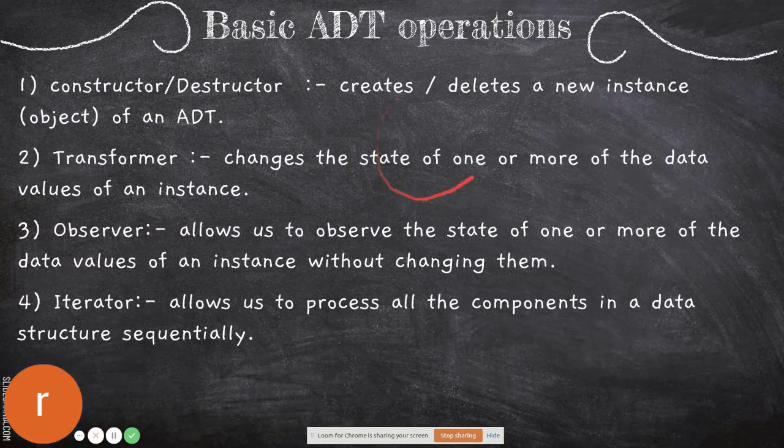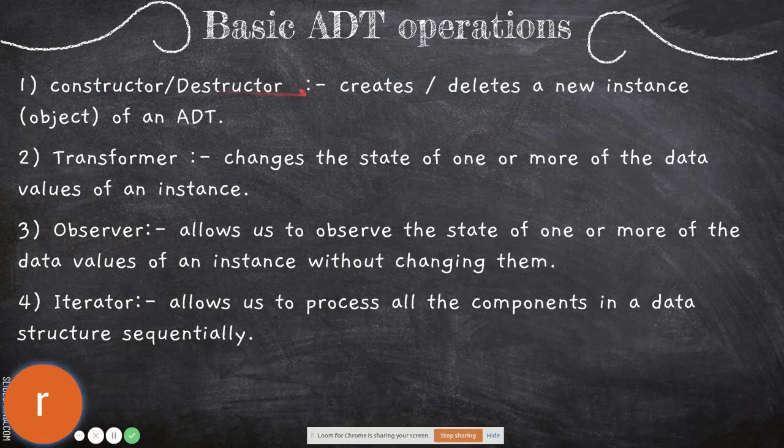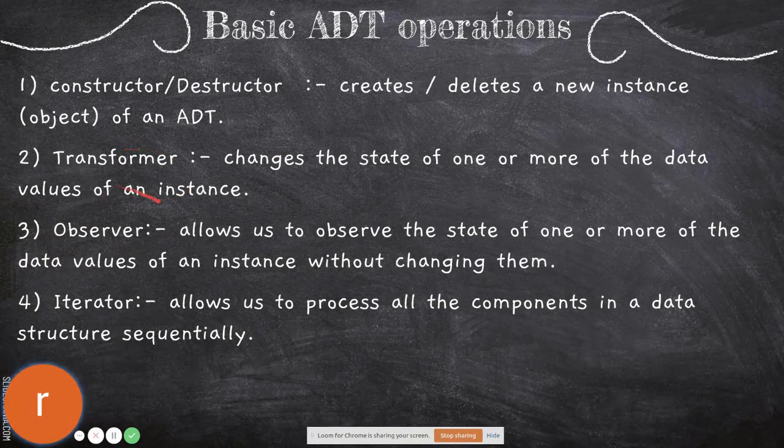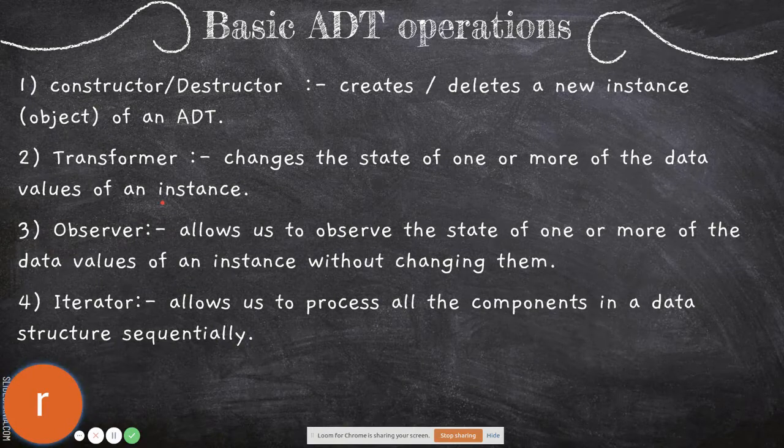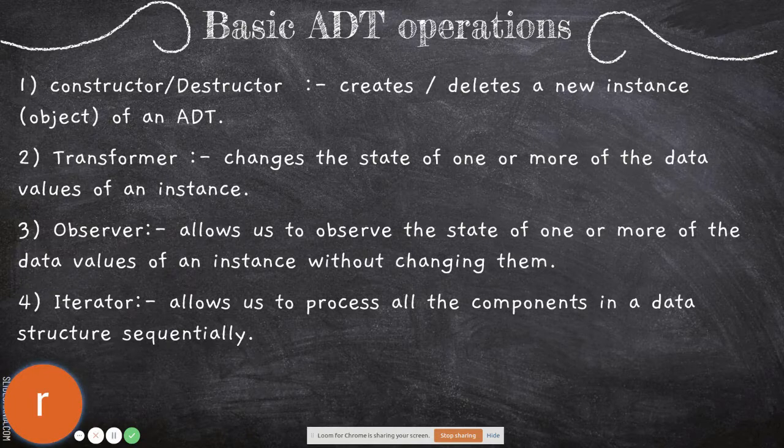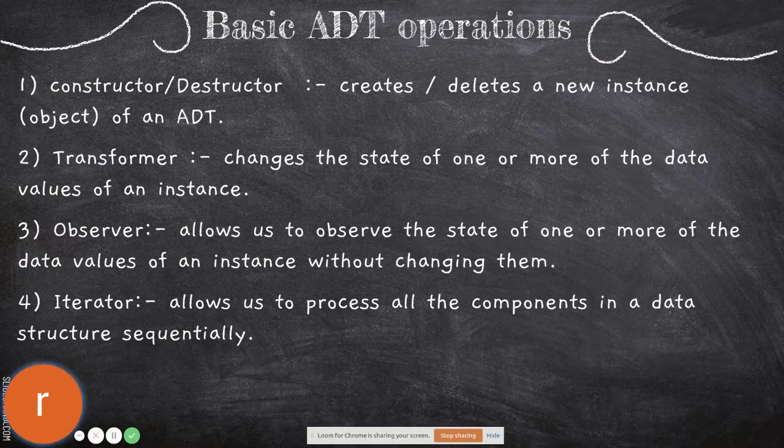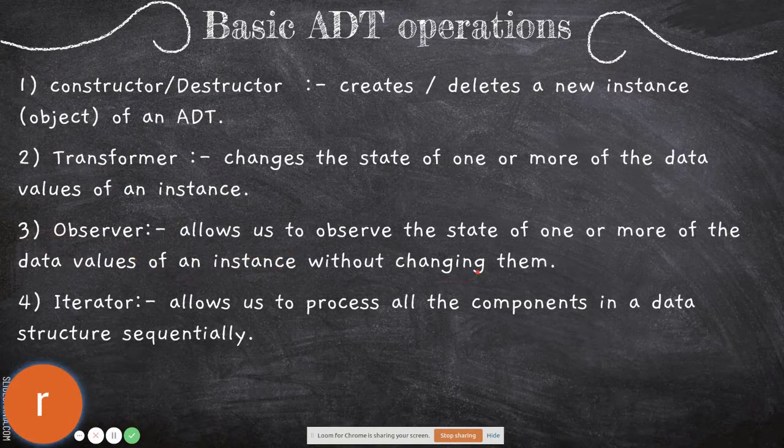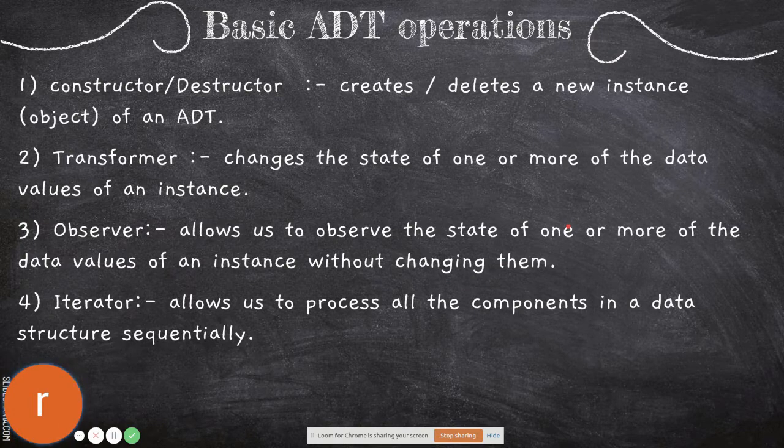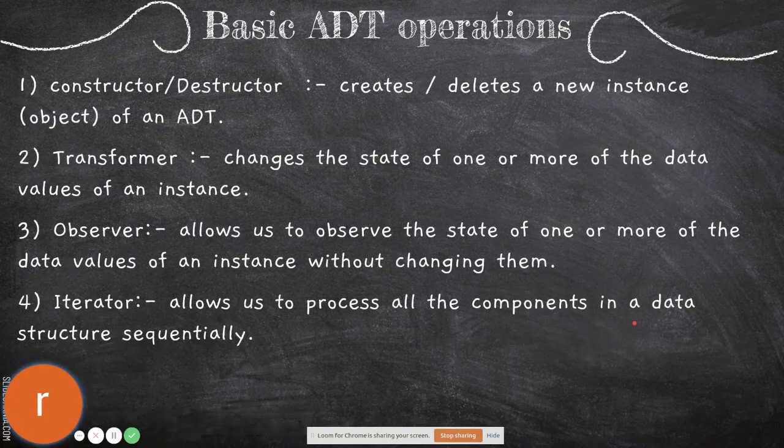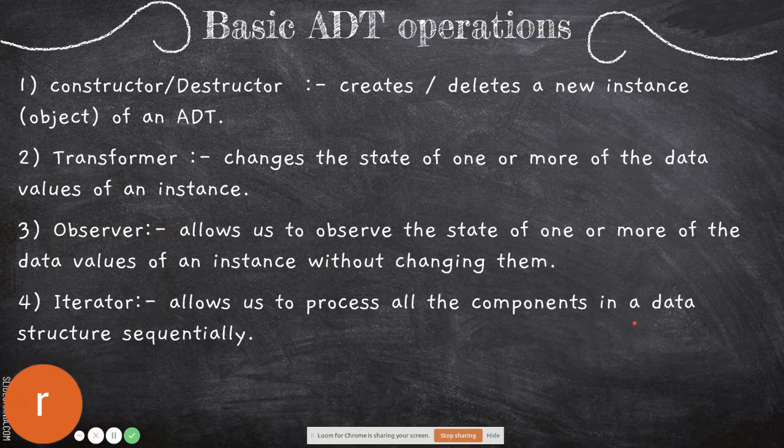Basic ADT operations include: Constructor or Destructor, which creates or deletes a new instance of an ADT object. Transformer changes the state of one or more data values of an instance. For example, if we create an instance and want to do modifications on it, we use the transformer. Observer doesn't do any modifications - it just prints a value. Whatever is there will be observed.